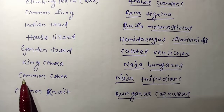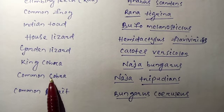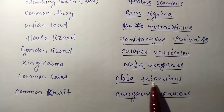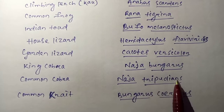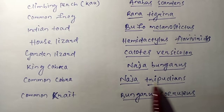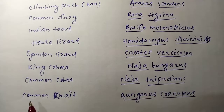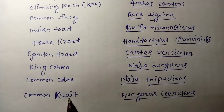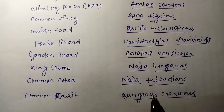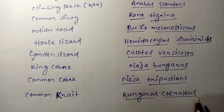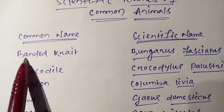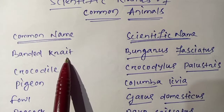Next is Common Cobra. The scientific name is Naja tripudians, which is also known as Naja naja. Next is Common Krait. It is called Bungarus caeruleus.